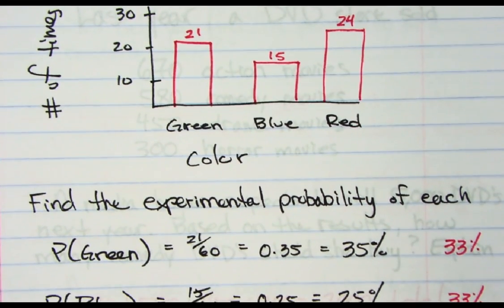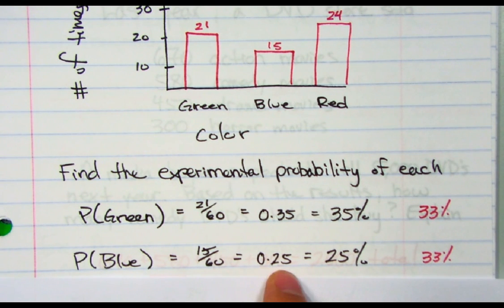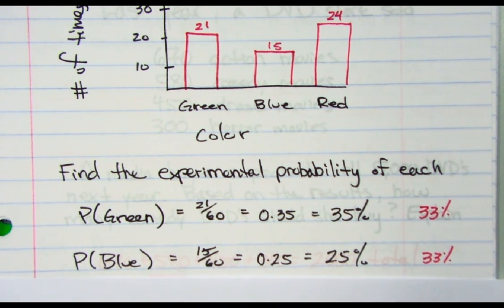Probability of blue. The blue was 15 out of 60, which reduces to 25%, and I was looking for 33%, so that was off by a little bit.